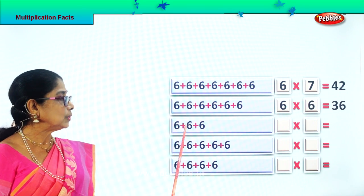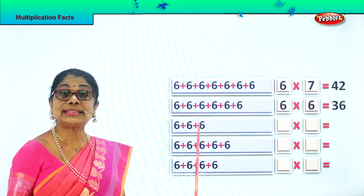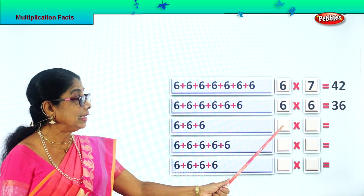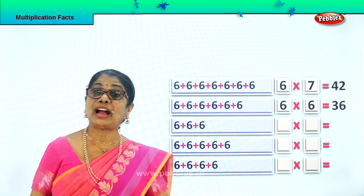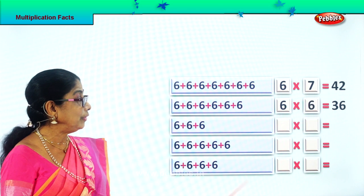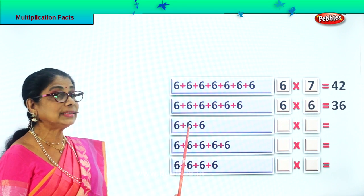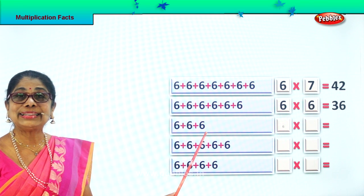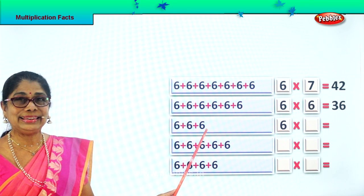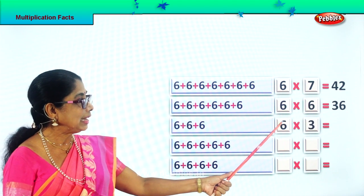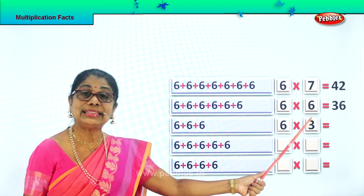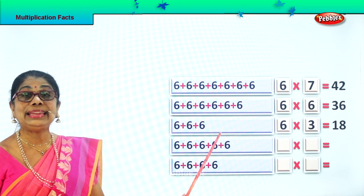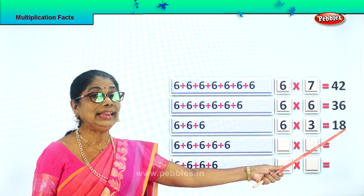Here you have 6, three times. So you write how many times — 3 times. 6 plus 6 is 12. 12 plus 6 is 18. 6 three times is 18. 6 into 3 is 18. That's the multiplication fact.